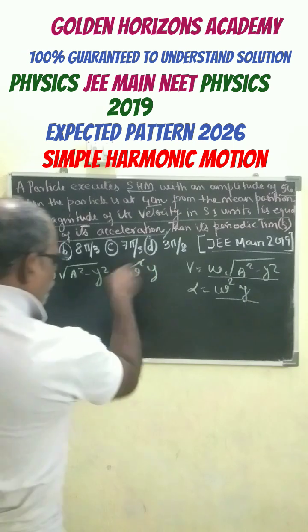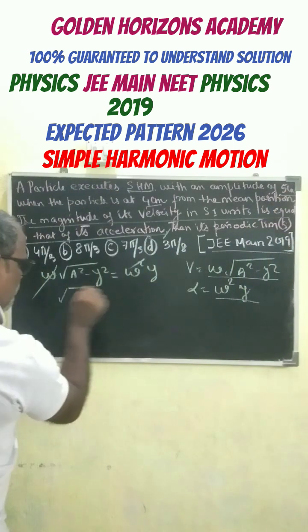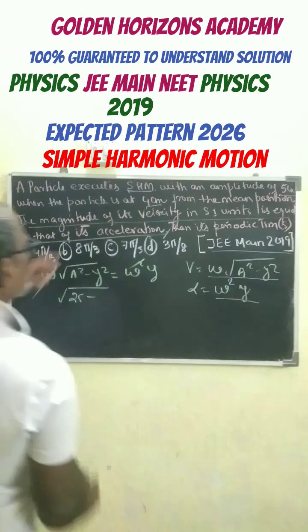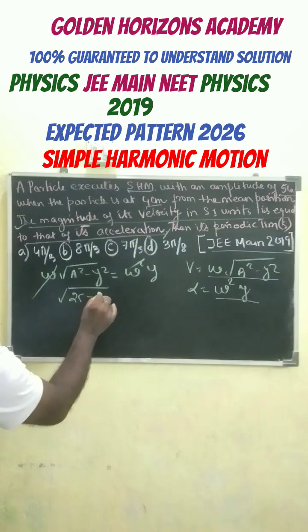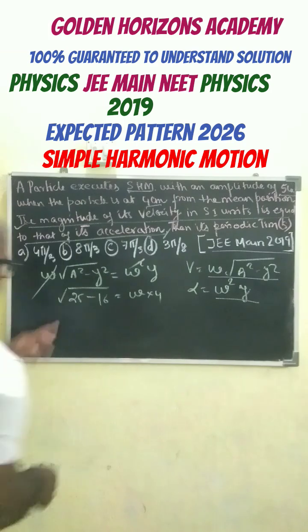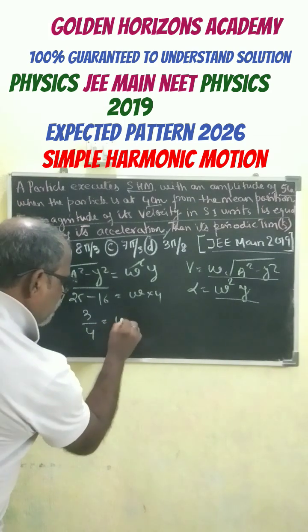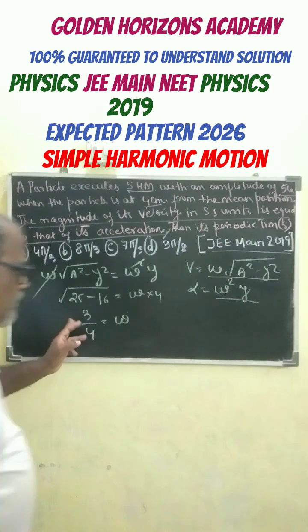We can cancel off omega. Now A is 5 and Y is 4, so we can write 25 minus 16 equals omega into 4. So root of 9, that is 3 by 4 equals omega, radians per second.